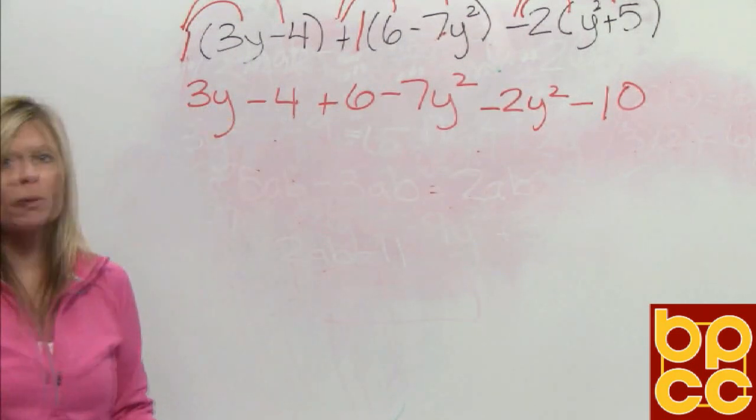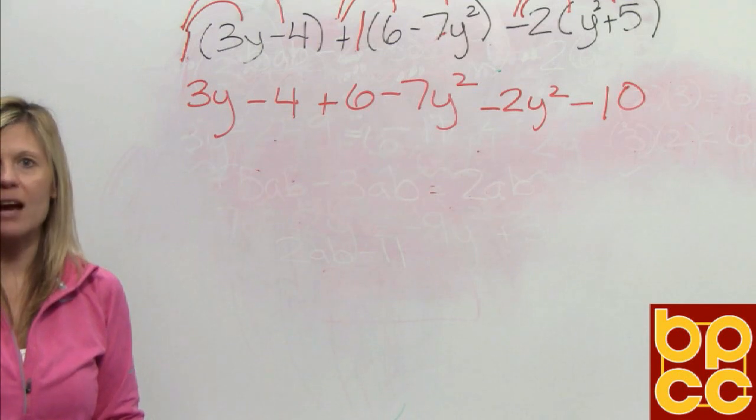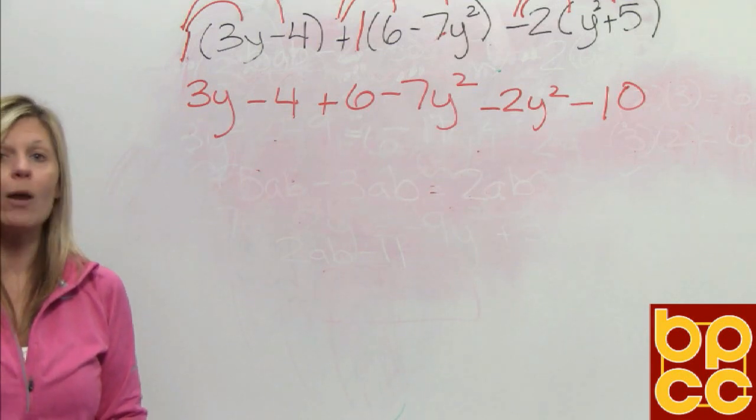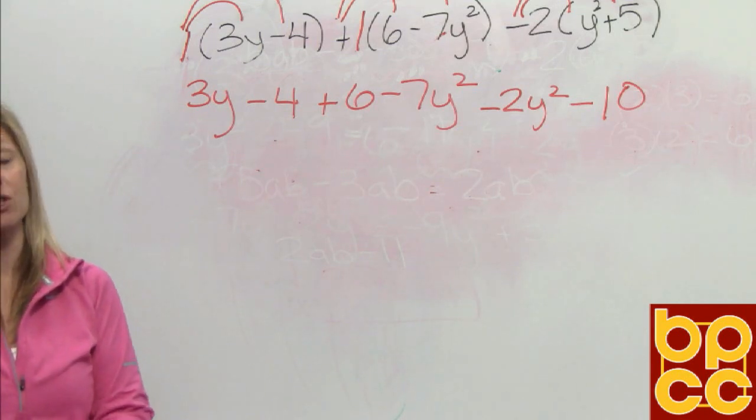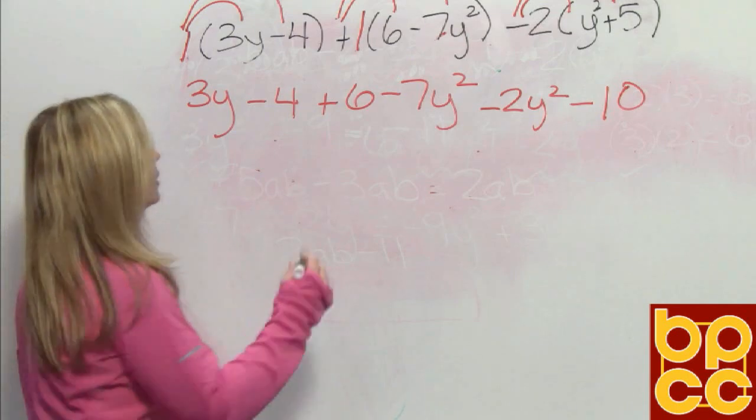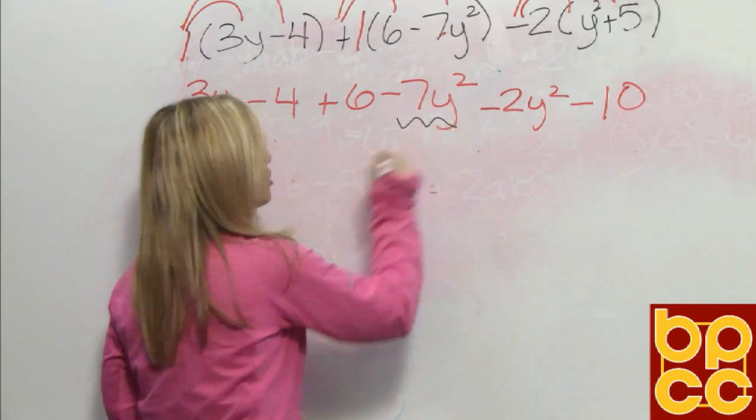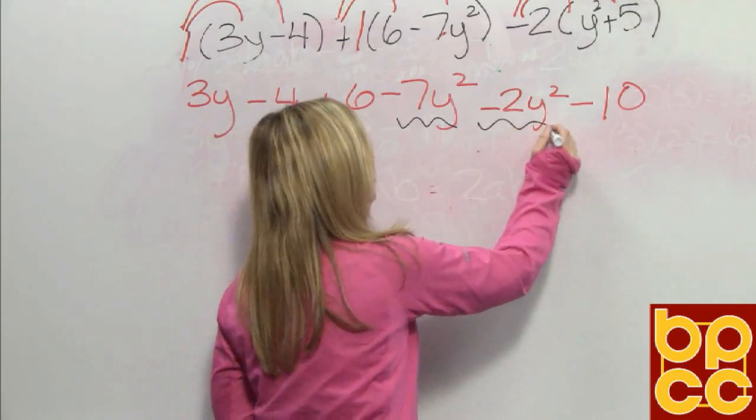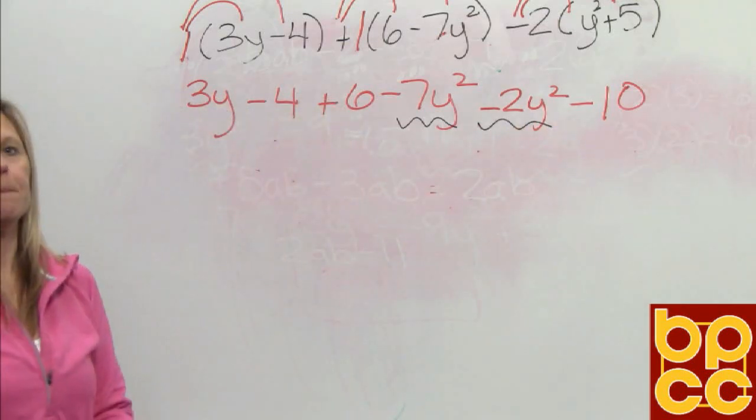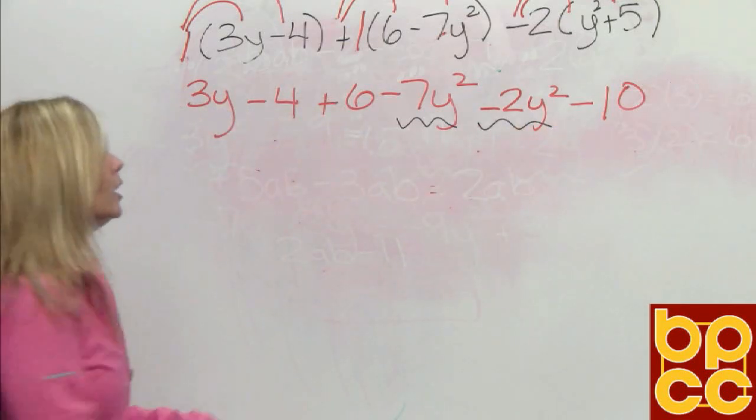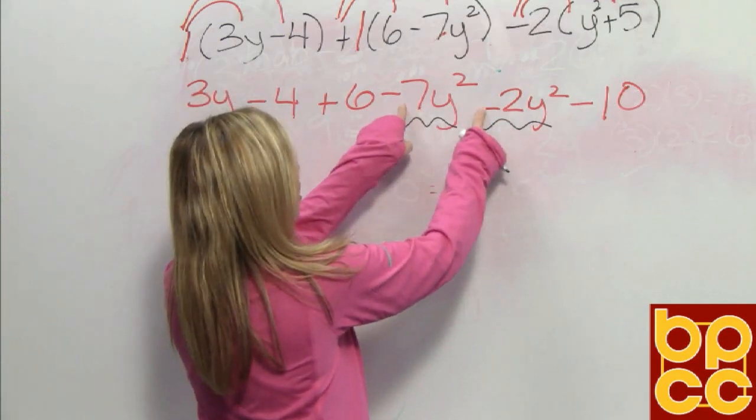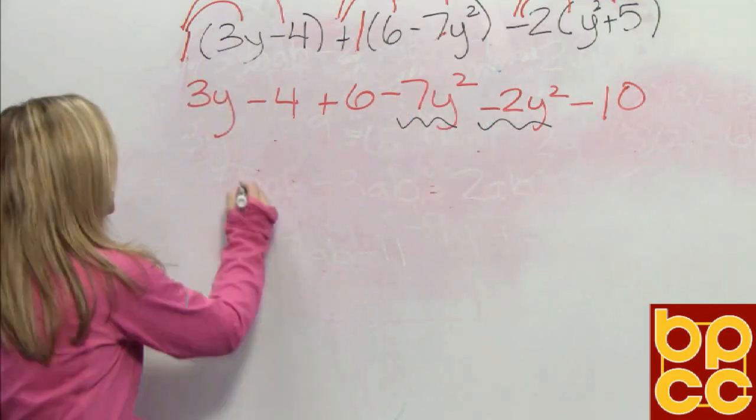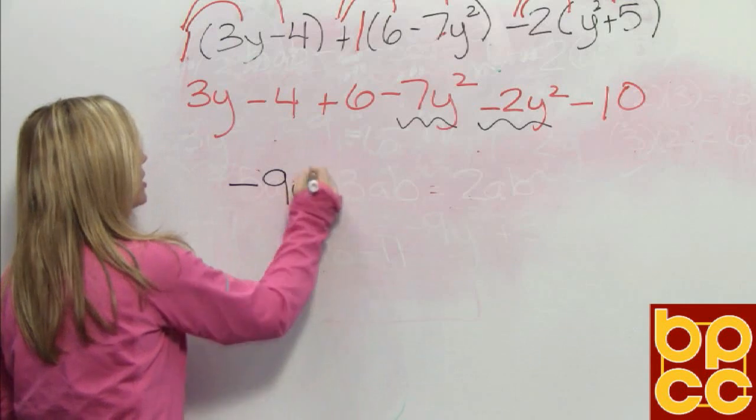Again, because we already know in our head the final answer has to be in descending order, why don't we find the terms with the biggest exponents first to put together. So if I look, here's our first term, negative 7y squared, and the next term, negative 2y squared. It makes sense to put them together first. Because these coefficients are both negative, we would add and we'd get negative 9y squared.